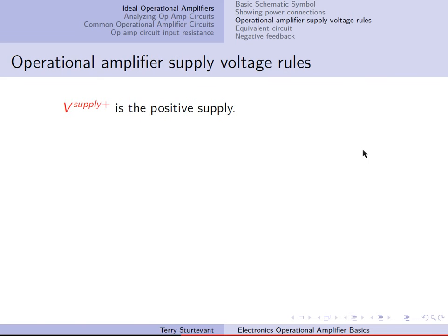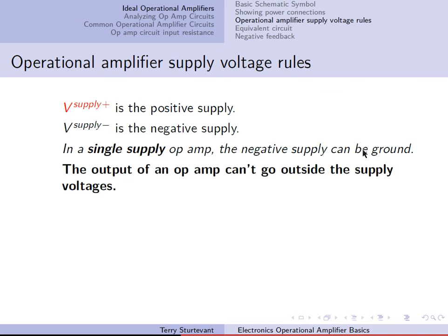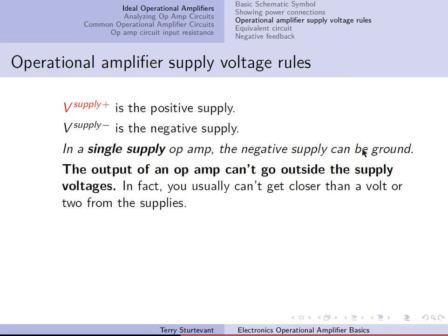The rules about the supply: in a single supply op-amp, the negative supply can be ground. The output of an op-amp can't go outside the supply voltages. In fact, with almost any electronic device, the supply voltages are the limits of what you can get on the output. With an op-amp, you can't usually get closer than a volt or two from each of the supplies.